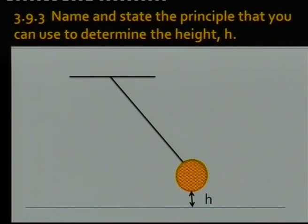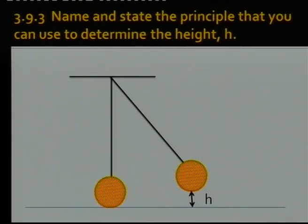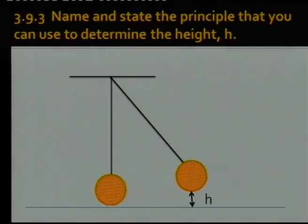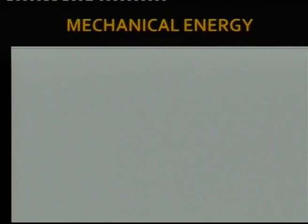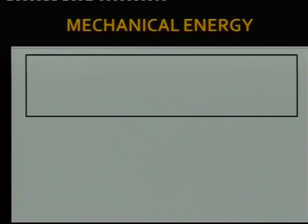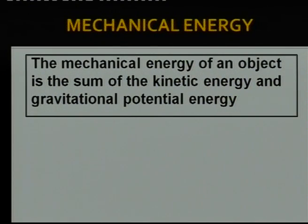Whenever you move from one place to another — when you move from the bottom and you move to the top — we have to look at mechanical energy. Mechanical energy of an object is simply the sum of the kinetic energy and gravitational potential energy.